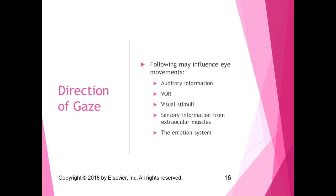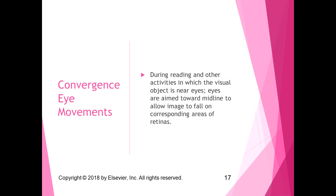The direction of gaze and eye movements can be influenced by many inputs: auditory information, the vestibular ocular reflex, visual stimuli, sensory information from the extraocular muscles, and the emotional system. So many different things can affect your direction of gaze.